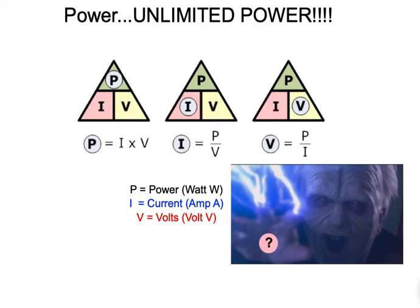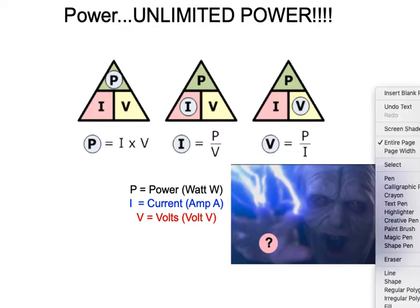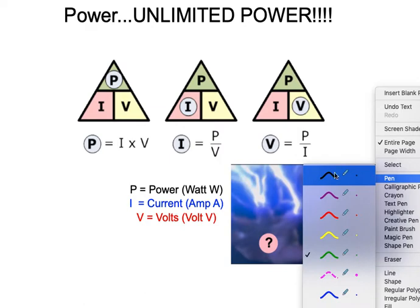This is a simple example of how to calculate power. In terms of electrical power, this is simply defined as the rate at which electrical energy is transferred through a circuit. That rate means like a time rating. But in this case, our simple formula is P equals I times V.